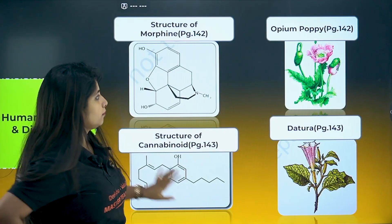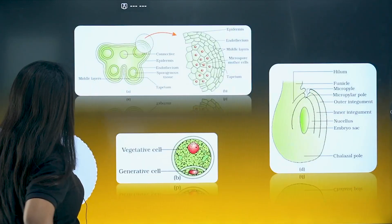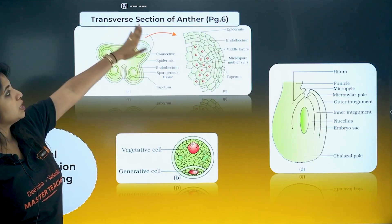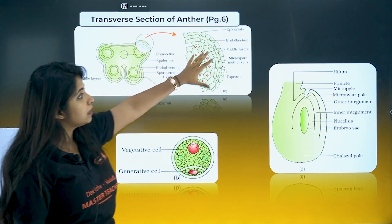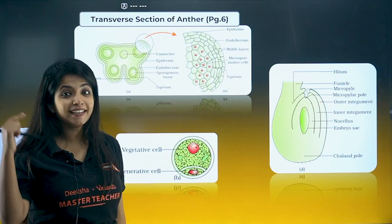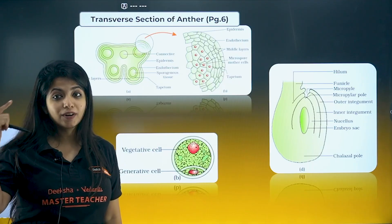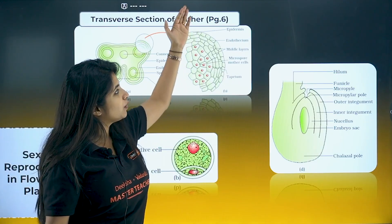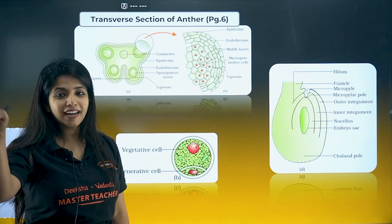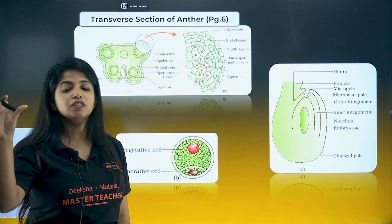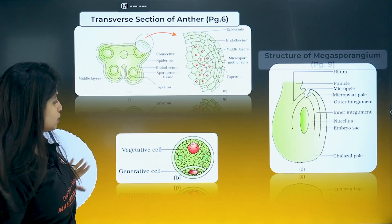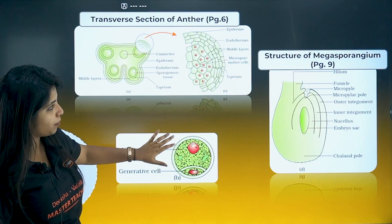Sexual Reproduction in Flowering Plants — the transverse section of anther, this diagram can be asked. Know about the layers using the mnemonic EMT: E is for epidermis and endothecium, M is for middle layer, and T is for tapetum. Know the role of tapetum. This picture is super important.